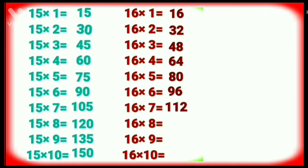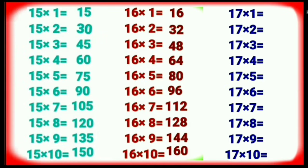Sixteen eights are one twenty-eight. Sixteen nines are one forty-four. Sixteen tens are one sixty. Table of Seventeen. Seventeen ones are seventeen. Seventeen twos are thirty-four. Seventeen threes are fifty-one. Seventeen fours are sixty-eight. Seventeen fives are eighty-five.